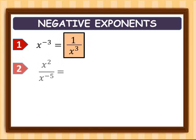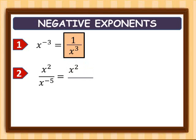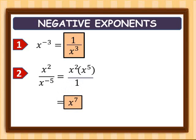Example two: x squared over x raised to negative five. Since x squared is positive, we simply copy it. Whereas x raised to negative five moves to the numerator and becomes positive. There is still a numerical coefficient of one in the denominator. Simplifying, x squared times x raised to five gives us x raised to the power of seven, or simply x raised to seven.